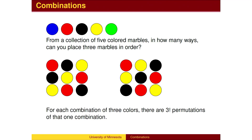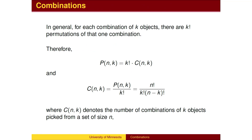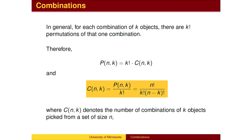For each combination of 3 colors, there are 3 factorial permutations. In general, for each combination of k objects, there are k factorial ways to rearrange those objects into a permutation. So to get the number of permutations, we can multiply the number of combinations by the number of permutations for each combination.